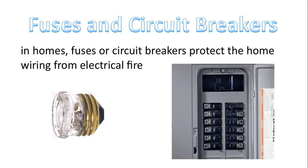In homes, fuses or circuit breakers protect the home wiring from electrical fire. The function of a fuse or a circuit breaker box in a home is to protect the actual wires, because if the wires get too hot, a fire can take place. This is a typical fuse used in older homes — homes that are greater than 40 years of age. Newer homes have circuit breaker boxes like this, where these don't actually need to be replaced — all you have to do is flip the switch back to reset it.